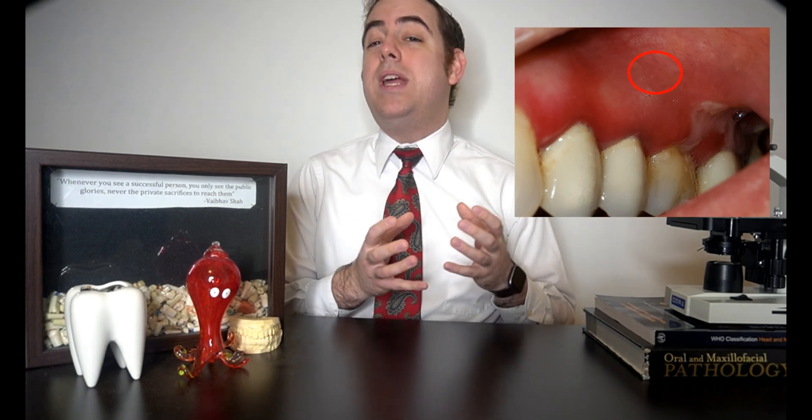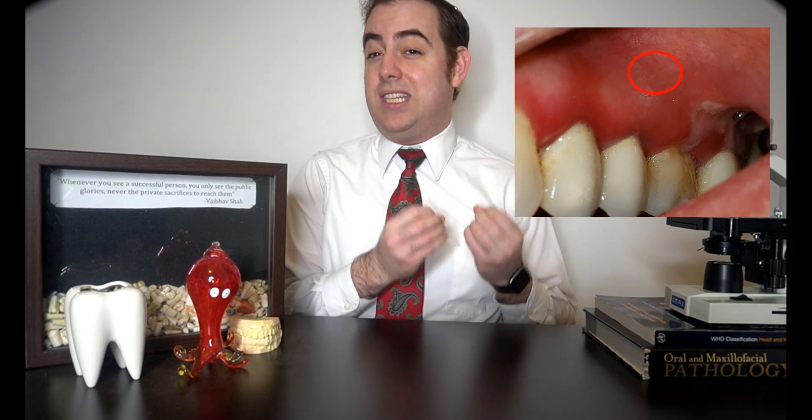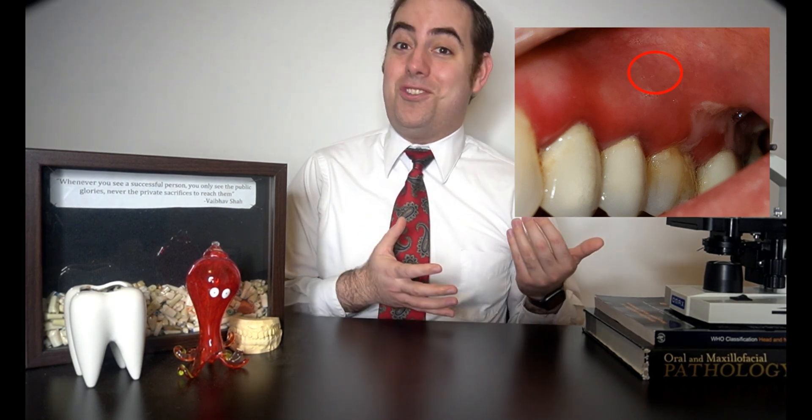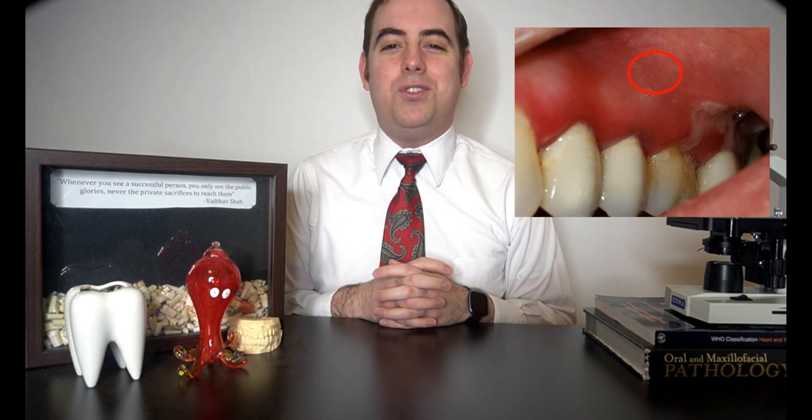In the case of desquamative gingivitis, it can be very difficult to get perilesional tissue. I've found that it's usually best to take a sample from the vestibule between the alveolar bone that holds the teeth and the cheek or lip. This will definitely result in perilesional tissue, but can be difficult to close primarily with sutures. For biopsies of vesicular erosive conditions, I will often split my biopsy in half — one half goes in buffered formalin, and the other half goes in Michel's solution for direct immunofluorescence studies.